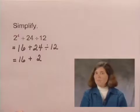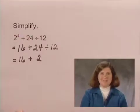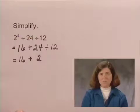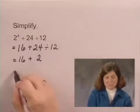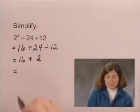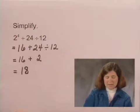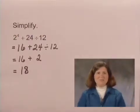There are no more multiplications and divisions, so we turn to the last step, additions and subtractions. There is one addition. We perform that as our last step. 16 plus 2 is 18. And 18 is the simplified form of that expression.